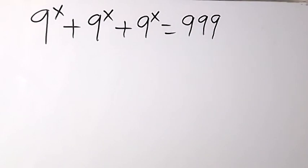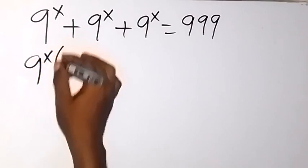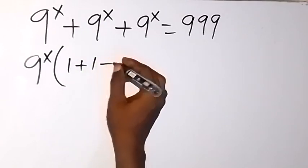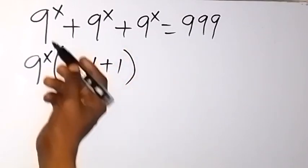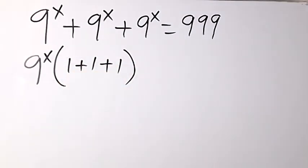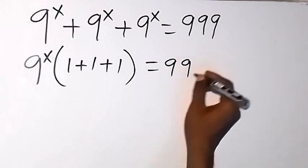From here, we can take 9 raised to power x outside, that is we factorize it, and we have 1 plus 1 plus 1. So 1 is left here, 1 is left here, 1 is left here. When we divide by 9 raised to power x, then that will be equal to 999.